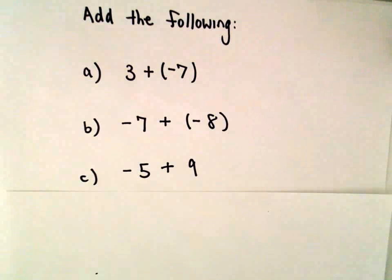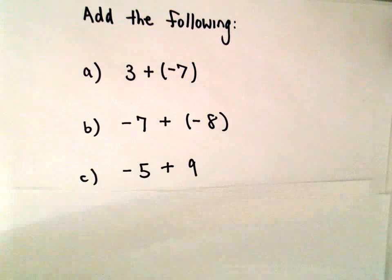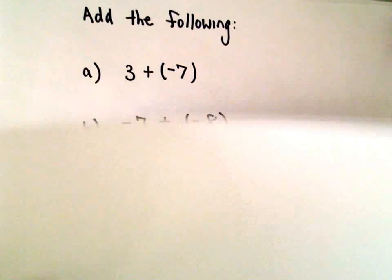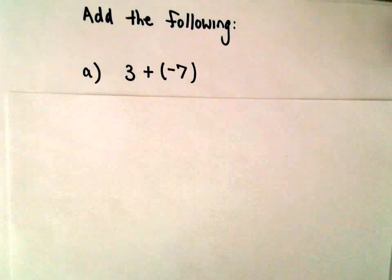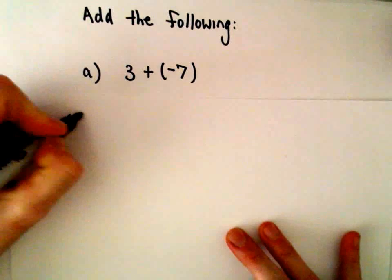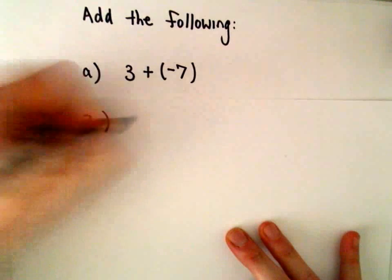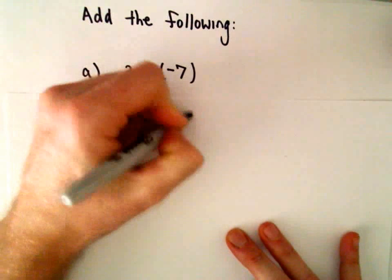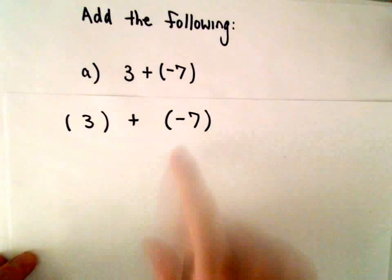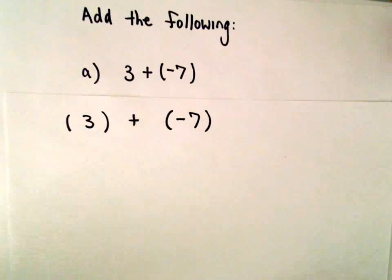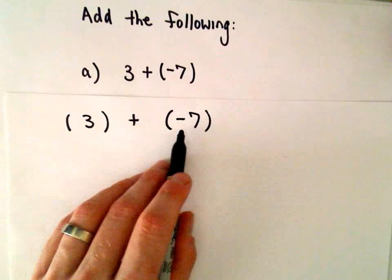And again, you could do this with the number line. I'm going to show you how I think about it, hopefully it's not too terribly confusing. I'm going to put the 3 in parentheses, and then I'm going to put the negative 7 also in parentheses. So we've got 3 plus negative 7.